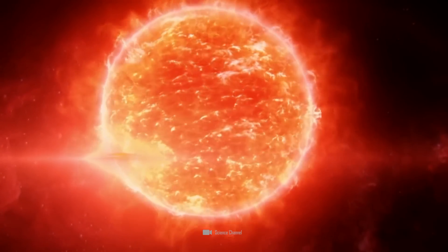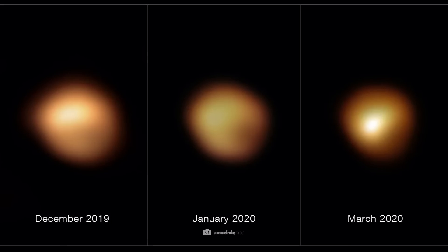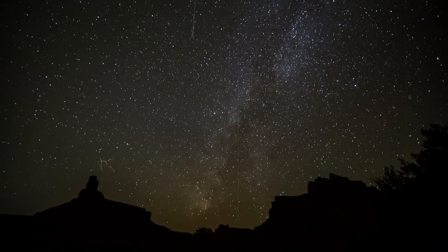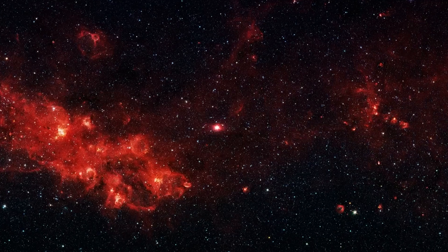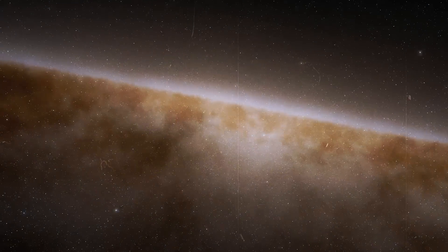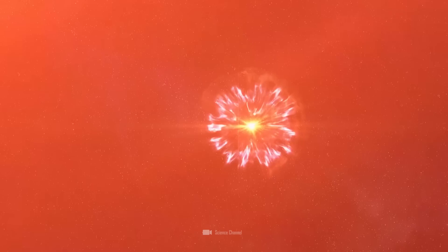The red supergiant Betelgeuse could be about to explode. Images show that Betelgeuse is completely dimmed and very unstable. Researchers around the world are eagerly awaiting this unique event. At a distance of just 600 light years, we on Earth will be able to see the spectacle with our naked eyes.